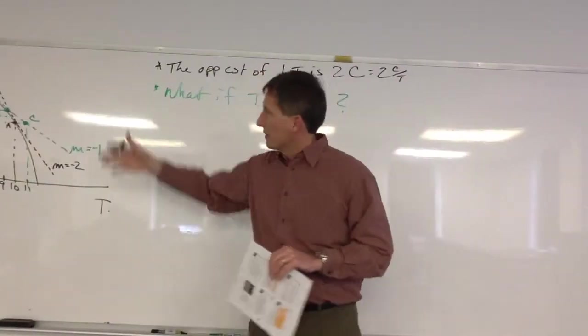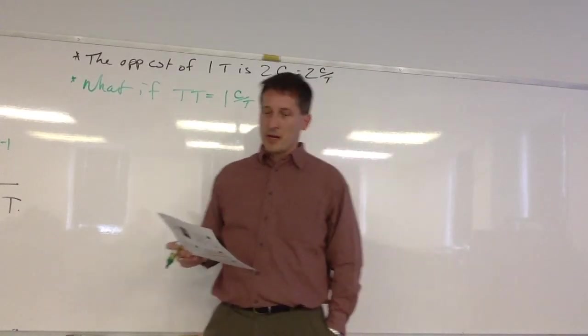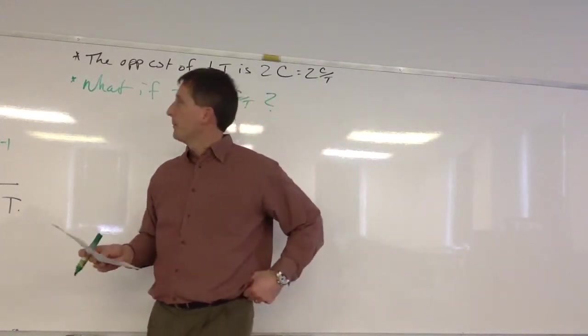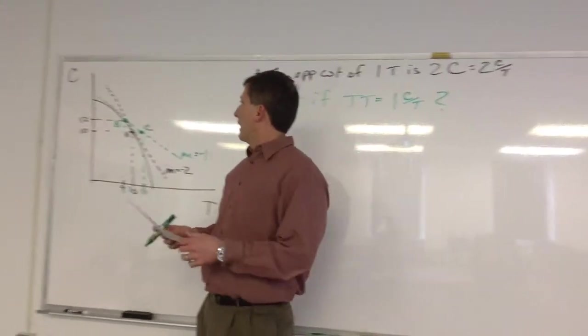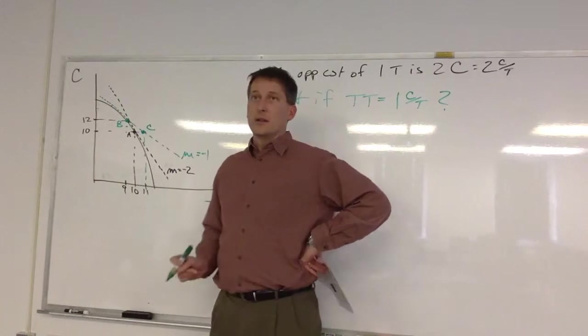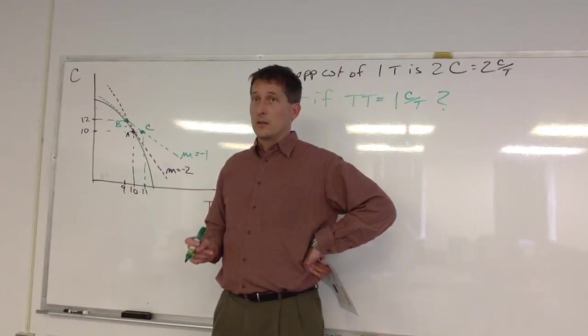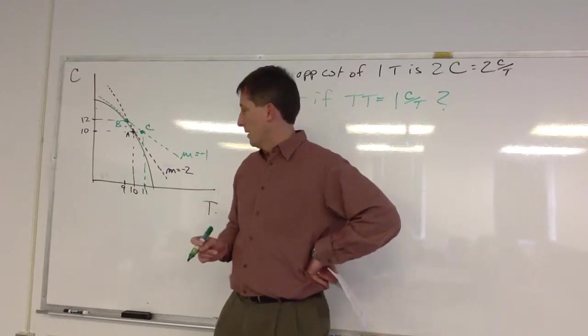And that was really a similar concept to what we did with the Ricardian model except now we've got the bowed out production possibilities frontier. All right, any questions on that? Why is the Ricardian a flat or yeah, flat line and we use the bowed out production possibilities frontier to this one? Just the assumption of the model.